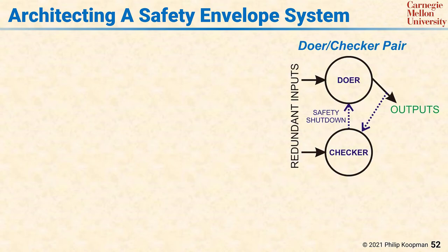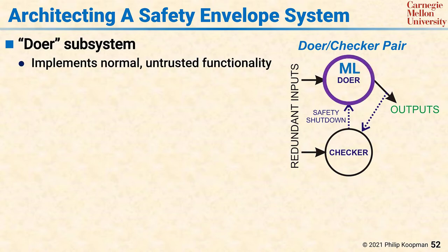A common architectural pattern for implementing a safety envelope is to use a doer-checker pair. In a doer-checker pair, there's a doer subsystem which implements the normal, potentially untrusted functionality. In a machine learning-based system, the idea would be that the machine learning part goes in the doer. It may be somewhat trusted via validation, but not validated to have life-critical levels of dependability. That's where the checker comes in.